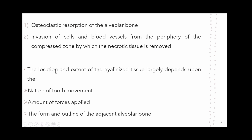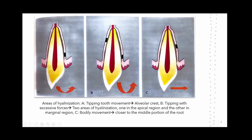The location and extent of the hyalinized tissue largely depends upon the nature of tooth movement, the amount of forces applied, and the form and outline of the adjacent bone. Regarding the nature of tooth movement, if a tipping movement is produced on the tooth, the hyalinized area would be seen near the alveolar crest.